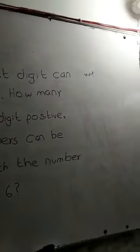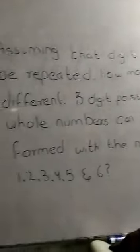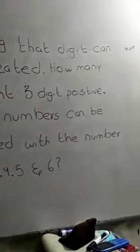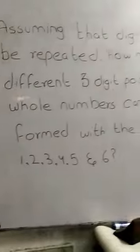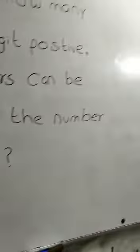Assuming that digits cannot be repeated, how many different 3-digit positive whole numbers can be formed with the numbers 1, 2, 3, 4, 5, and 6?